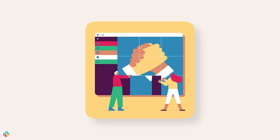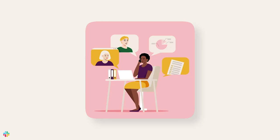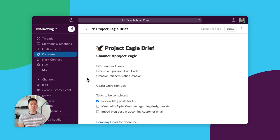Third, keep everyone on the same page so you can move work forward faster. It can be difficult to get aligned on a project or company goal even when everyone works in the same office. But as work becomes even more remote and asynchronous, it's even more challenging to stay aligned. With canvases, you can create project briefs that are easily accessible by everyone. You can list your project goals so that everyone knows what you're targeting with this work. List tasks in the canvases so the teams know what's been done and what's left to tackle.